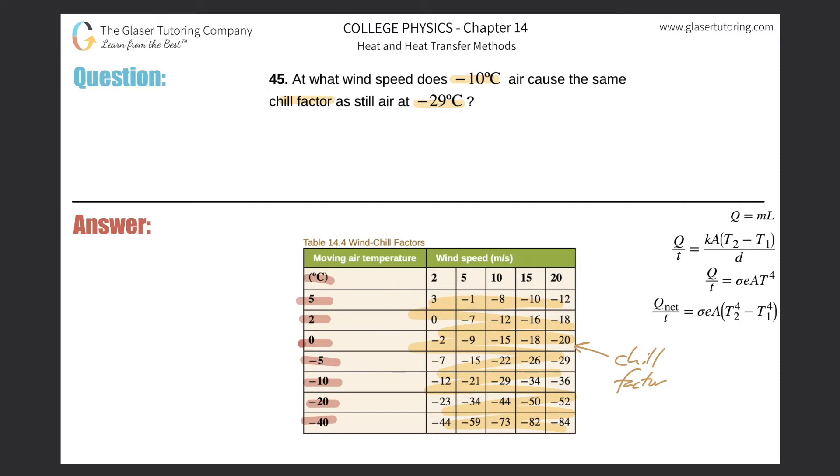So basically I'm going to now look up in the table where the moving air temperature is negative 10. I'm going to locate then where it has a chill factor of negative 29.